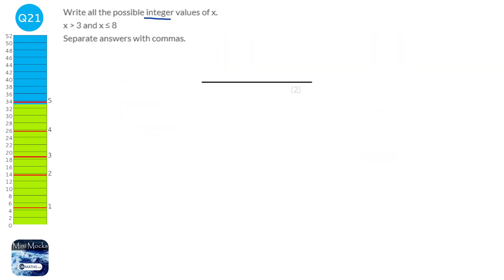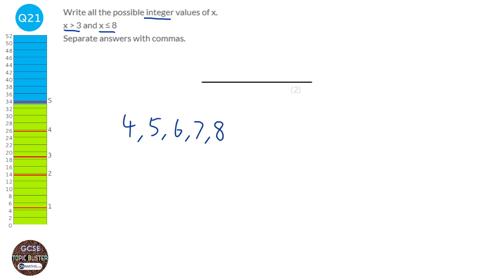Integer just means whole number, so we're looking for all whole numbers that satisfy these two inequalities. The first says it has to be greater than 3, so the smallest is 4. The second says it has to be less than or equal to 8. It can't be 9 because 9 is not less than or equal to 8. So our answer is 4, 5, 6, 7, and 8.